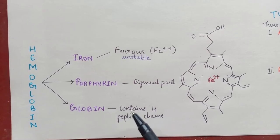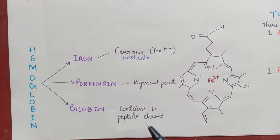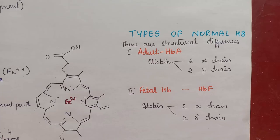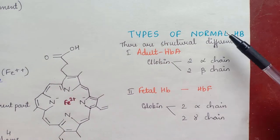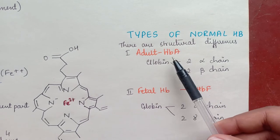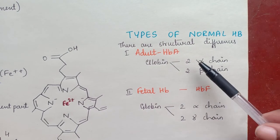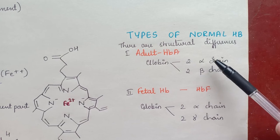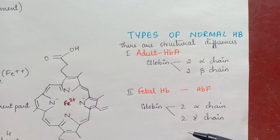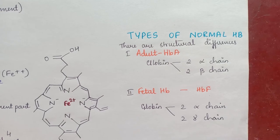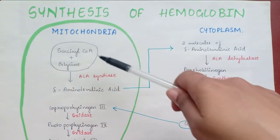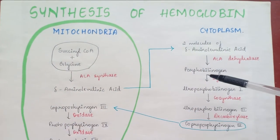Globin contains four polypeptide chains: two alpha chains and two beta chains. Types of normal hemoglobin: hemoglobin is of two types — adult hemoglobin and fetal hemoglobin. Adult hemoglobin has two alpha chains and two beta chains, whereas fetal hemoglobin has two alpha chains and two gamma chains.